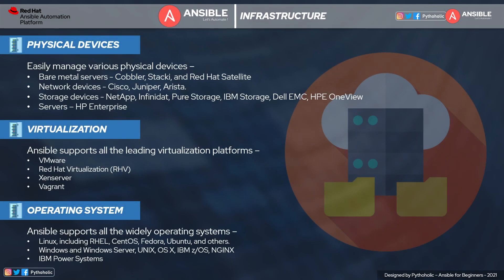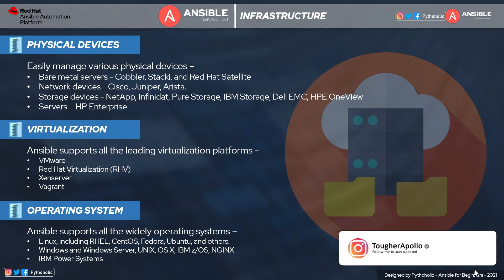With Ansible, you can manage physical devices such as bare metal servers with Cobbler Stack and Red Hat Satellite, and network devices such as Cisco, Juniper, or Arista, and storage devices like NetApp and servers such as HP Enterprise. For virtualization, Ansible supports all leading platforms such as VMware, Red Hat Virtualization (RHV), Xen servers, and Vagrant. On the operating system side, Ansible supports all widely used operating systems: Linux, RHEL, CentOS, Fedora, Ubuntu, Windows and Windows Server, Unix, OSX, IBM, NGINX, and IBM Power Systems.